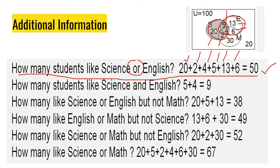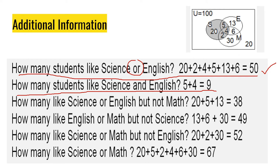Next question: how many students like Science and English? For this question, we use the intersection. We consider the values 5 and 4 — the intersection of Science and English. Science-intersection-English is 5 plus 4, which is equal to 9. Those are the students who like both Science and English.